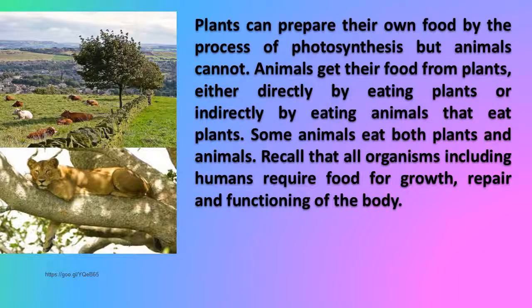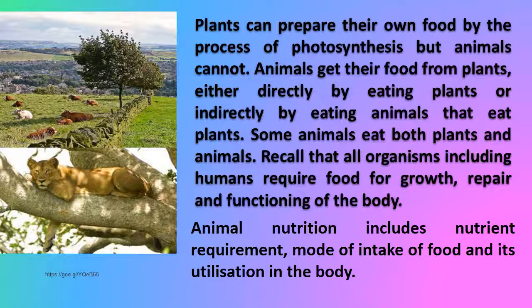Plants can prepare their own food by the process of photosynthesis, but animals cannot. Animals get their food from plants either directly by eating plants or indirectly by eating animals that eat plants. Some animals eat both plants and animals. All organisms, including humans, require food for growth, repair, and functioning of the body. Animal nutrition includes nutrient requirement, mode of intake of food, and its utilization in the body.